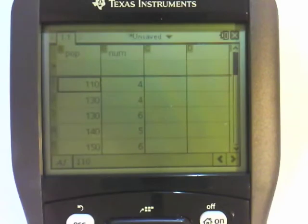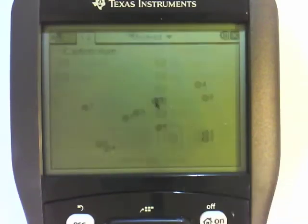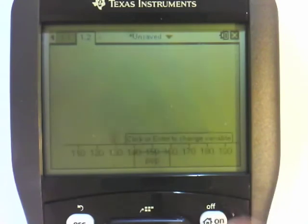So what you do is you draw a scatterplot by adding a data and statistics tab, and then you press tab to add the variables to the axes, so like this.